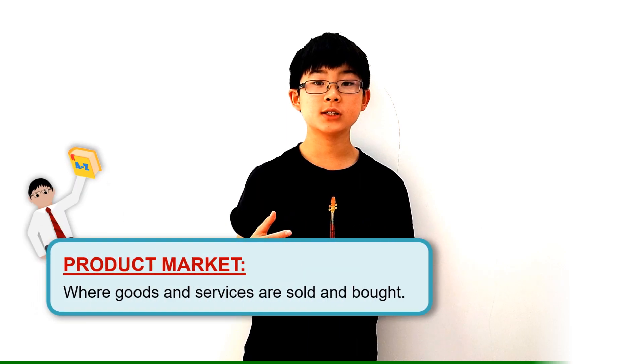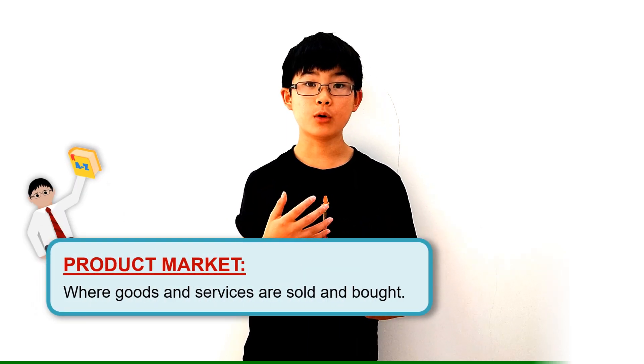This is all me being a buyer in something called the Product Market. So the product market is where goods and services are sold and bought to consumers, which is me. These products can include things from food all the way to phones. If you look around you, all of these things are probably from the product market, as this is the main market that we buy from.